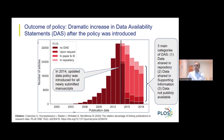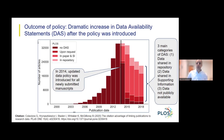We have also been able to observe how frequently different data sharing approaches are being used by authors when we analyze PLOS articles. There are three main approaches: the first is sharing data in a repository; the second is sharing data in the paper or as supporting information files — sometimes called supplementary material; the third is sharing data privately where there are legal or ethical restrictions on data sharing.